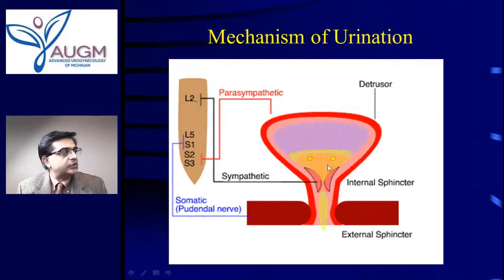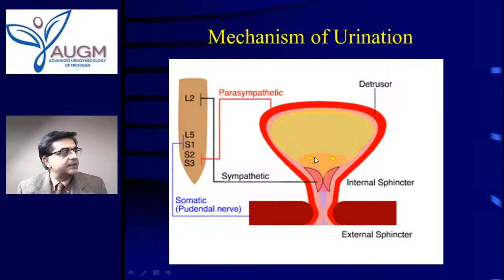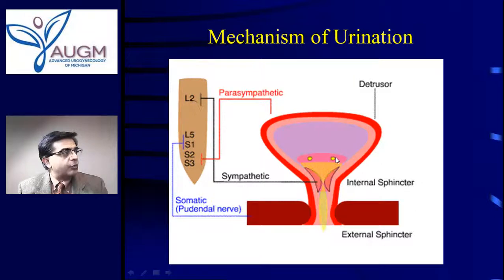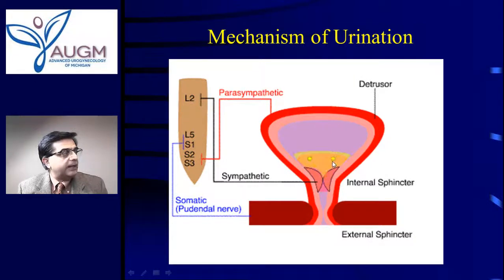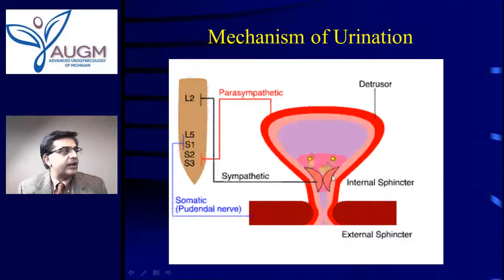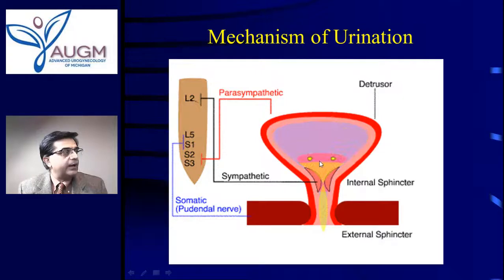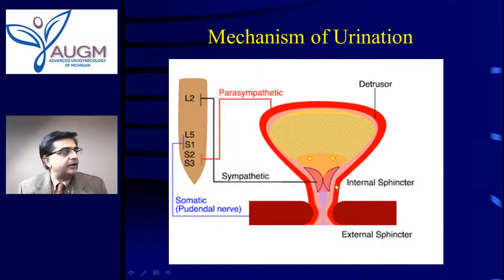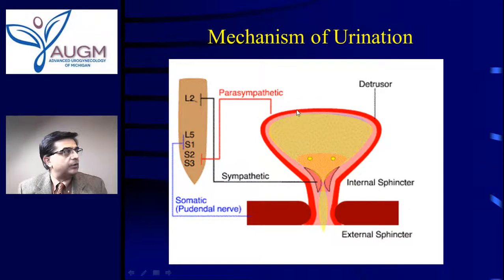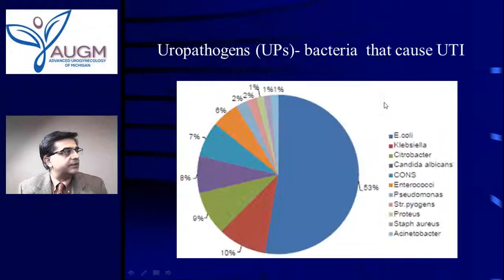The classic way urine is produced, stored, and released: the two ureteral openings drop urine into the bladder, which stores it until it is time to empty. Then it squeezes, the urethra relaxes, and the urine comes out — one way out from the bladder through the urethra. This is controlled by the nervous system.